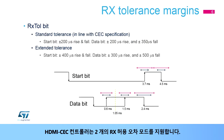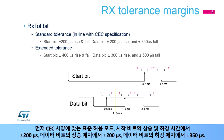The HDMI CEC controller supports two RX tolerance margin modes. The first is a standard tolerance mode in line with CEC specifications: plus or minus 200 microseconds on start bit rise and fall time, plus or minus 200 microseconds on the rising edge of a data bit, and plus or minus 350 microseconds on the falling edge of a data bit.